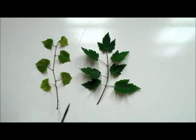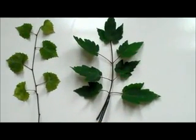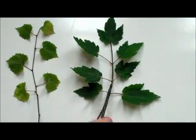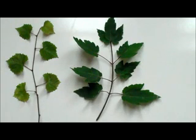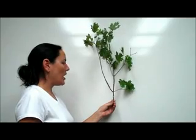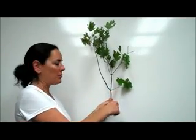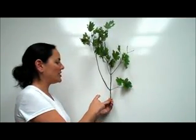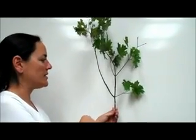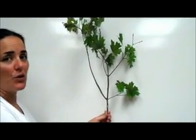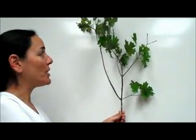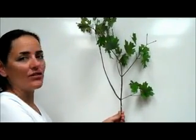If two leaves occur at the same point directly opposite from each other, then it is called opposite. When plants are opposite, not only are their leaves opposite but also their branches and twigs. This can be very useful during the winter time when plants have lost all of their leaves.